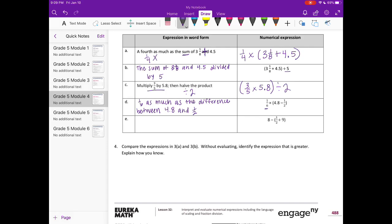E, we have 8 minus 1 half divided by 9. I'm going to start with 8 minus, and the answer to a division problem is called a quotient. So I'm going to use that word, 8 minus the quotient of 1 half and 9.